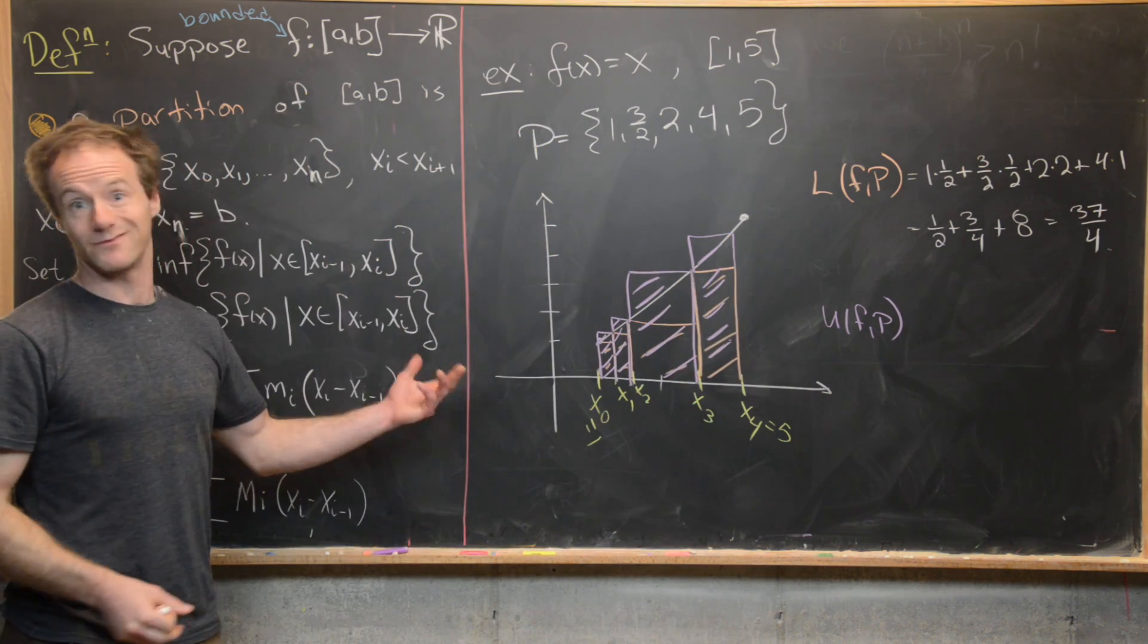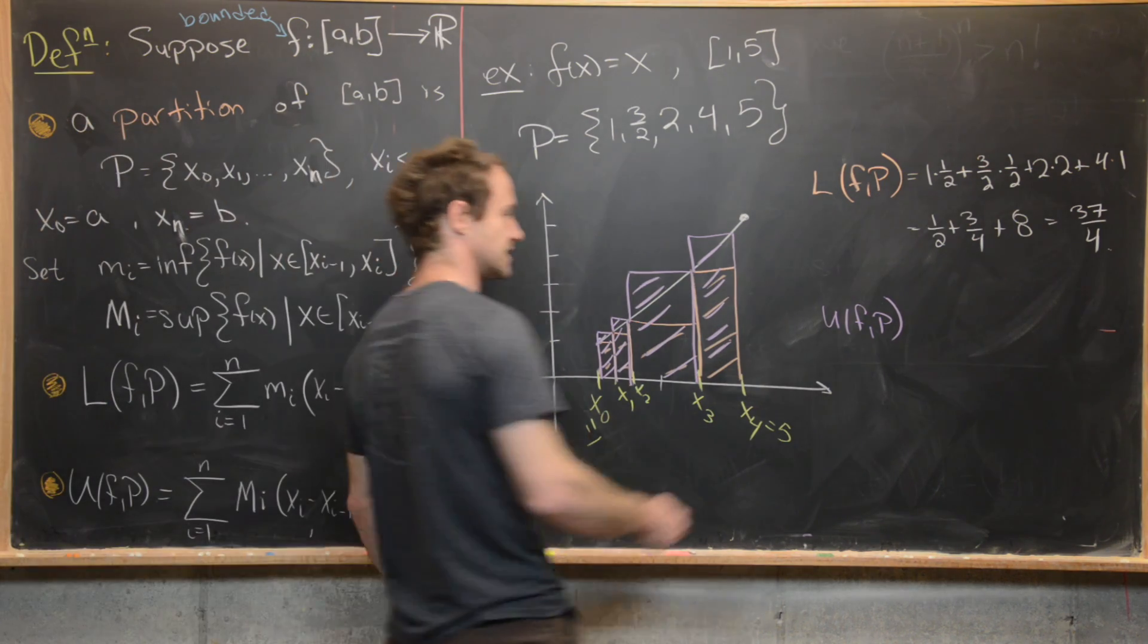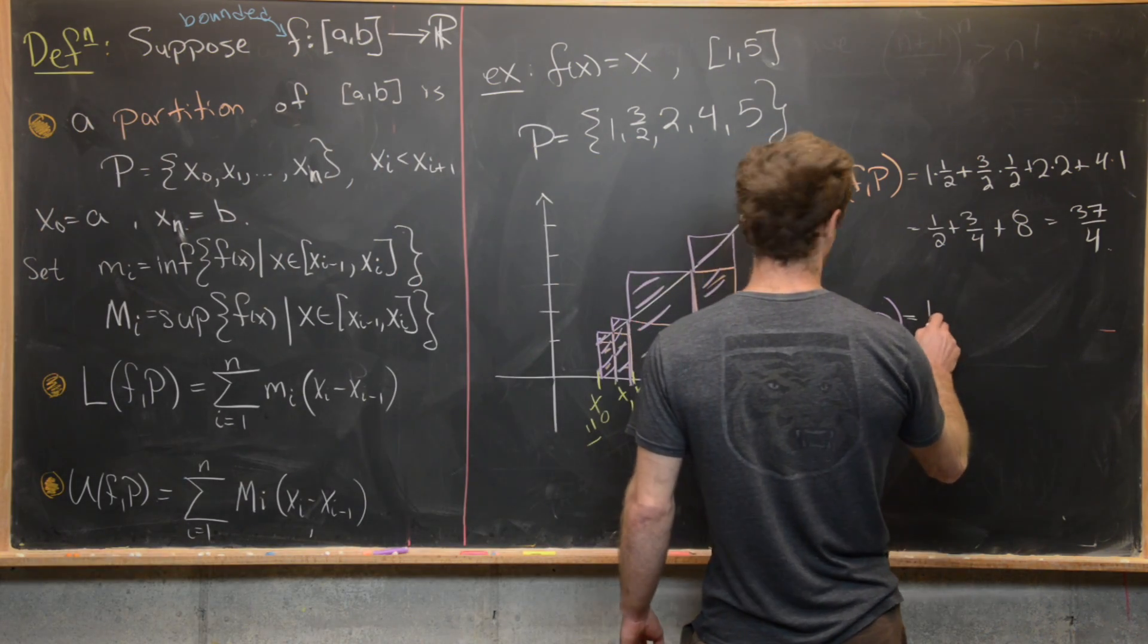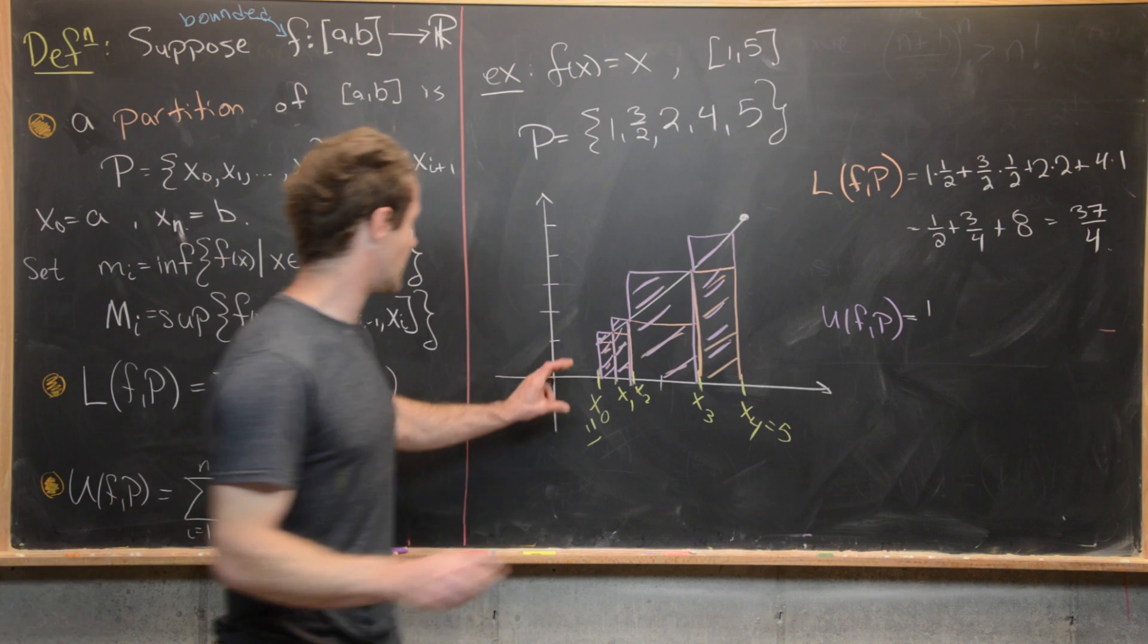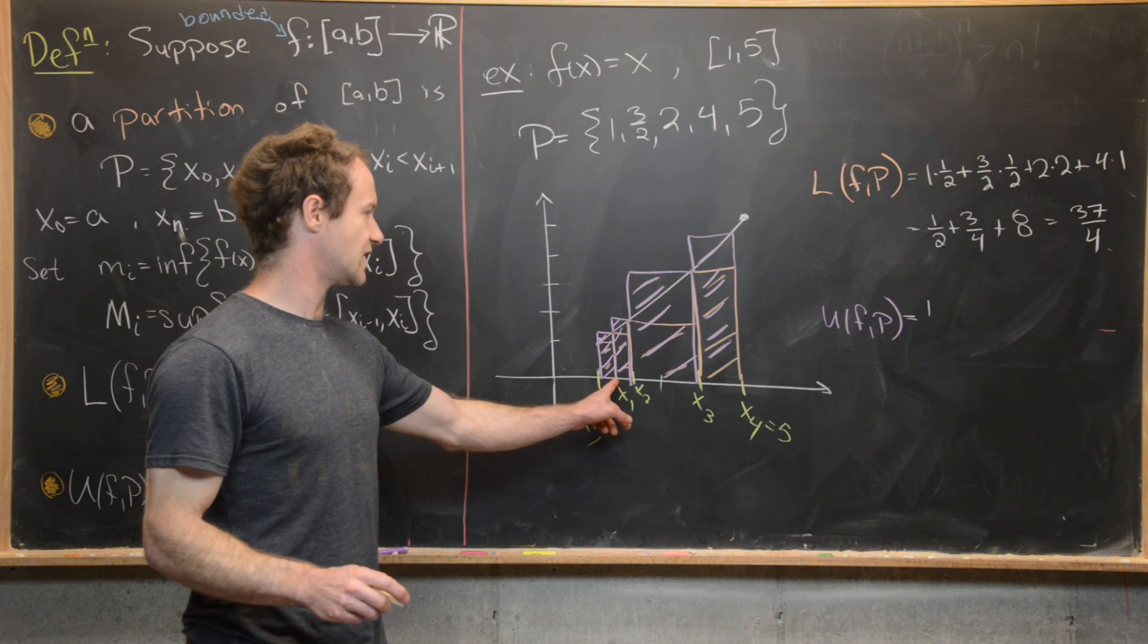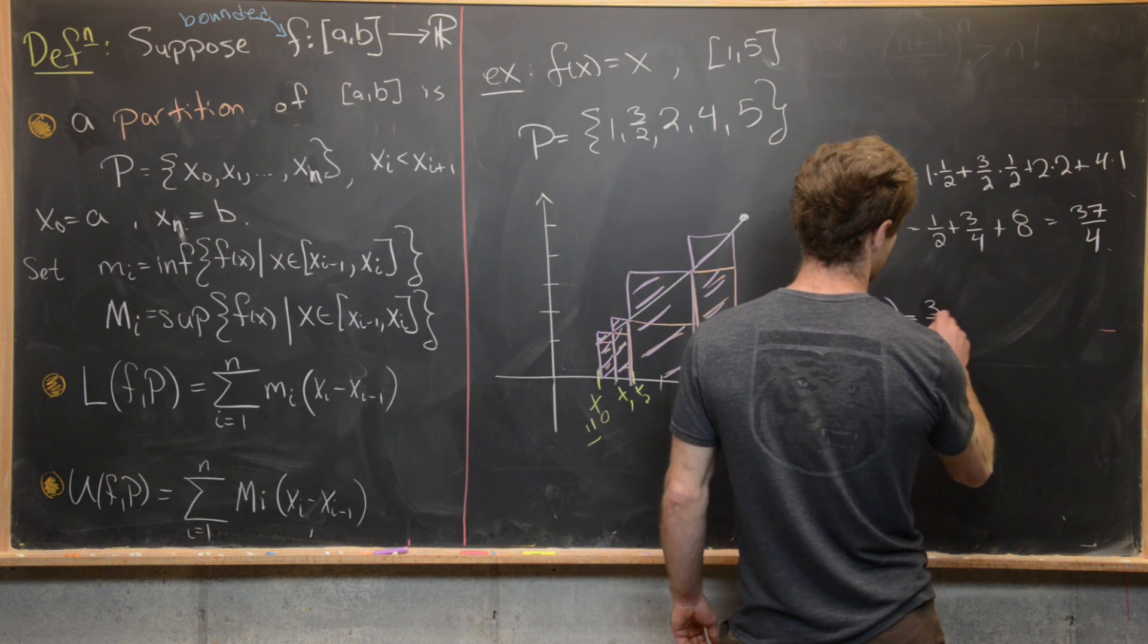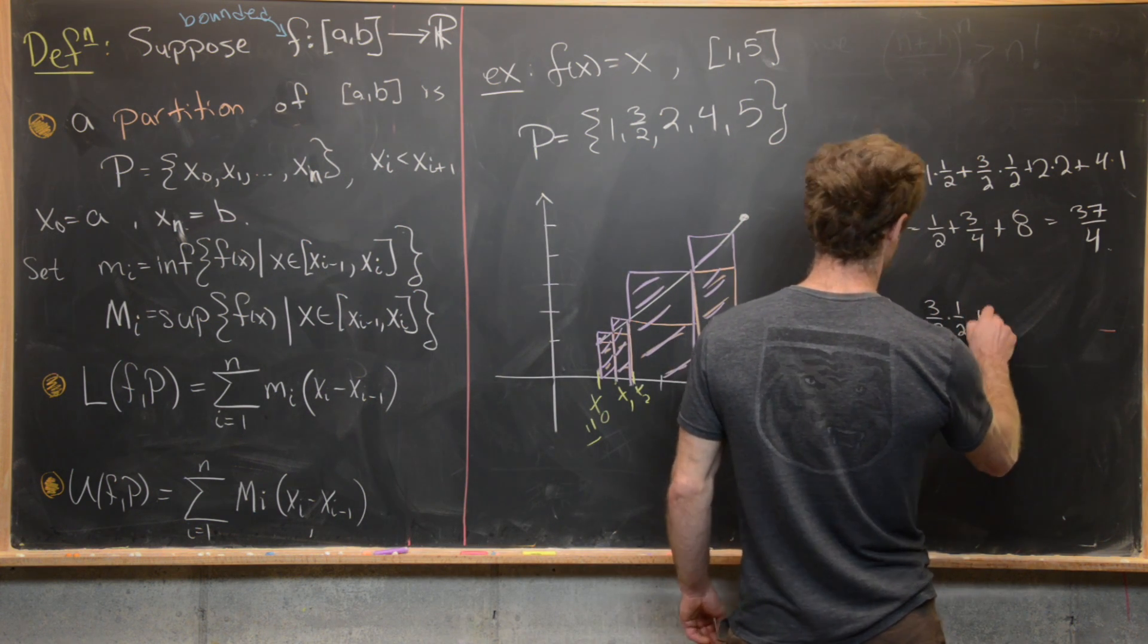So now we can again find the area of each of those rectangles with just a width times height. So let's see. The first one has height of, let's see, it's going to be 1 and a half because it's through this endpoint. And then it's going to be width 1/2. So here we're going to have 3/2 times 1/2 plus. So this next one has width 1/2 and height 2. So that's going to be 1/2 times 2.